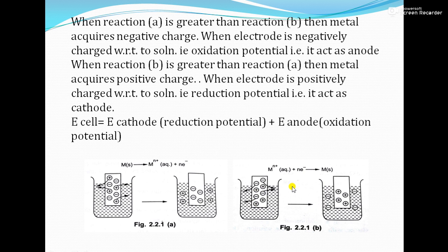This depends on the electrochemical series. If a metal has fewer electrons in its outer shell, it will more readily get oxidized — for example, sodium, potassium, or calcium easily lose electrons and acquire positive charge. For zinc, the same oxidation reaction takes place. That is called oxidation potential. If any metal gets reduced, that is called reduction potential.